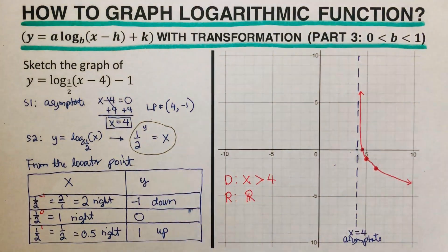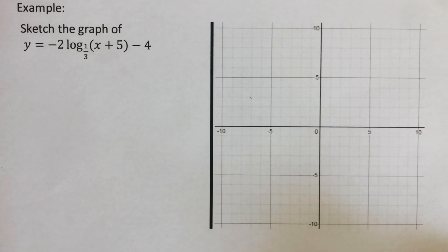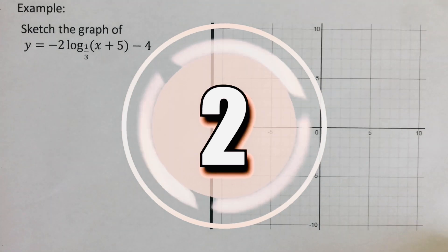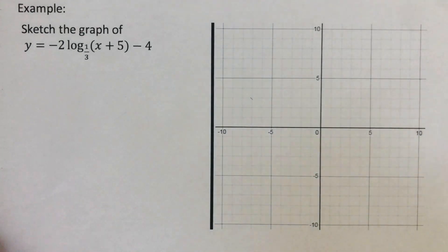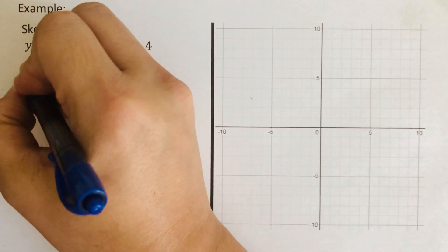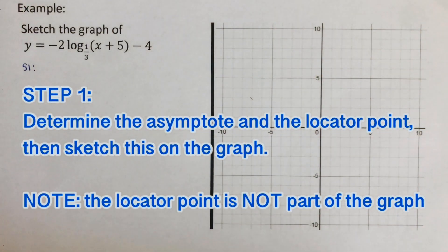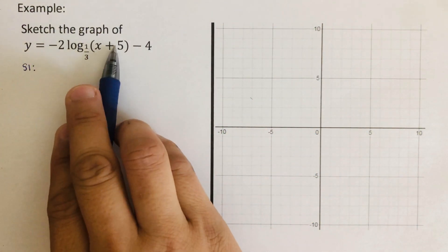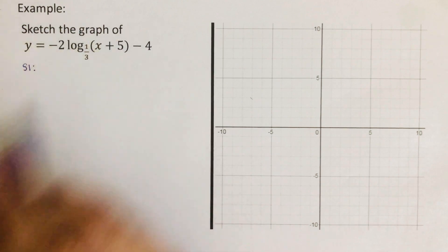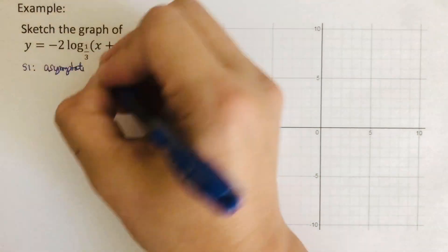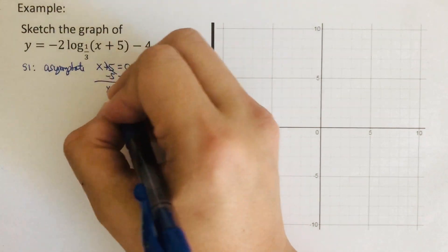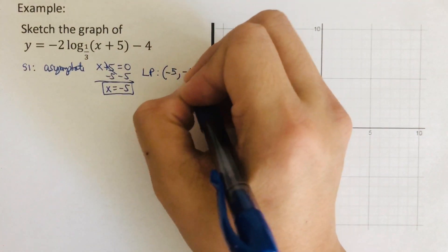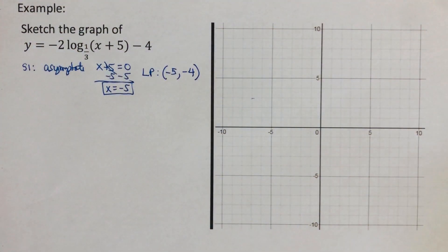At this time I encourage you to pause the video and try this problem on your own, then check your answer. For this next problem, the first step is to determine the asymptote and the locator point and sketch them on the graph. The locator point is not part of the graph, so I set up the asymptote by setting the expression inside the parentheses equal to zero. Then we sketch the asymptote and the locator point.